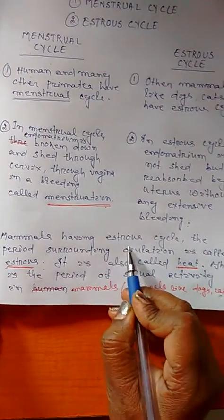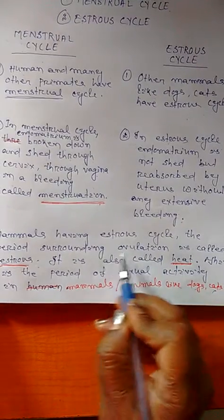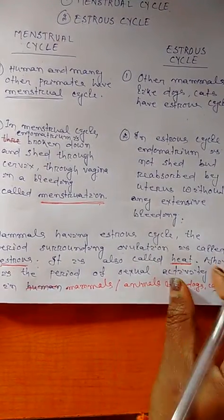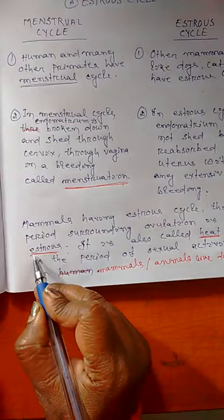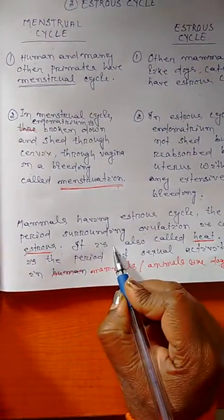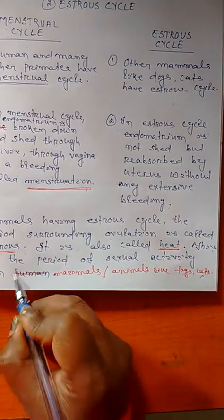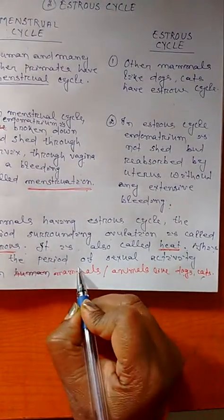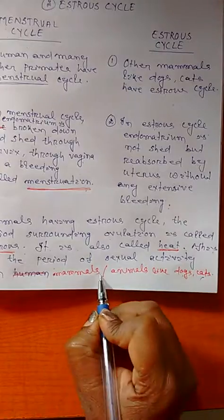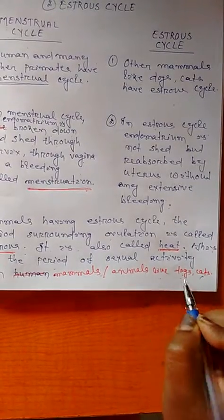In mammals having estrous cycles, the period surrounding ovulation is called estrus. It is also called heat or heat period. This is the period of sexual activity of the mammals or animals like dogs and cats.